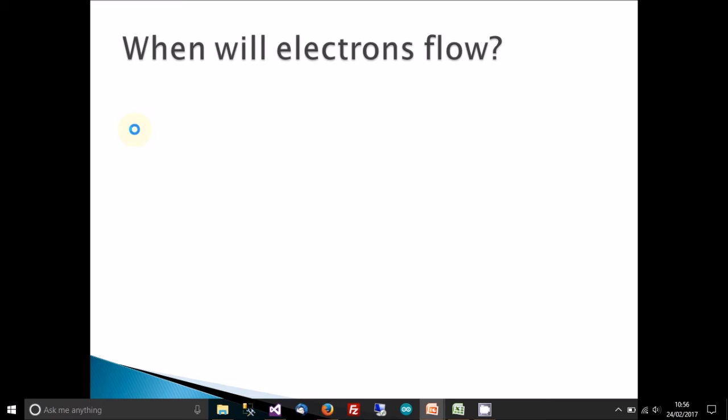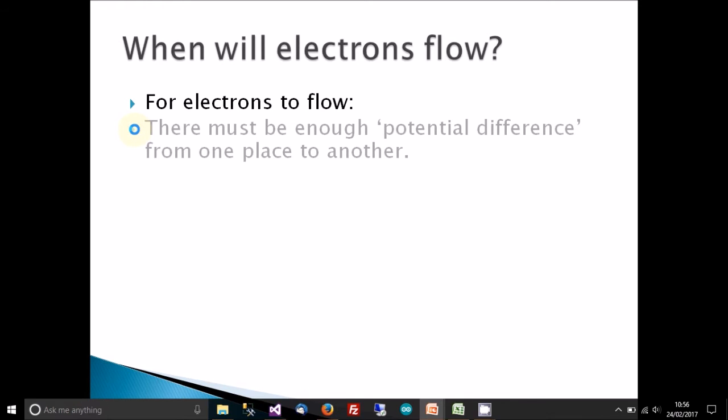Okay, so in what situations do these electrons flow? To make electrons flow, or in other words to get electricity, there must be enough potential difference from one place to another.